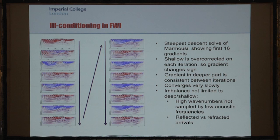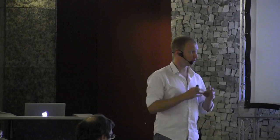This imbalance isn't limited to deep and shallow. It can apply to any directions of model update that have a relatively small impact on the functional but aren't necessarily insignificant to the result we want — for example, relatively high wave numbers in the model that we're still sampling with low acoustic frequencies, and in my more recent work, the balance between how macro model updates affect the functional due to reflected arrivals.